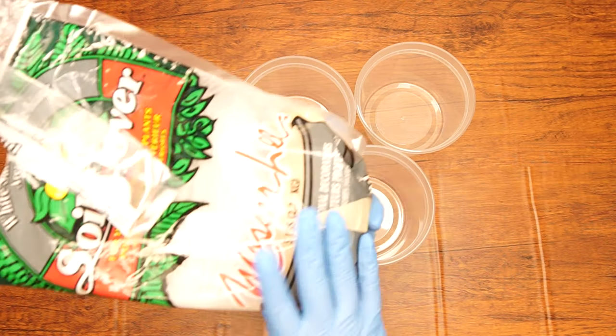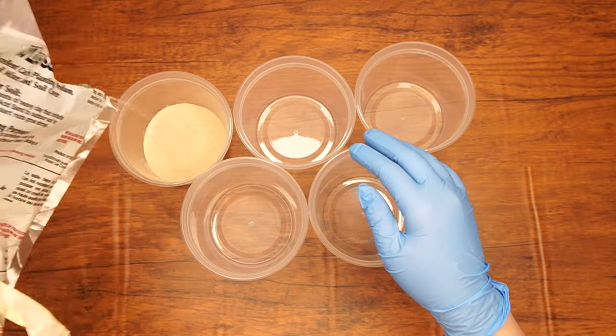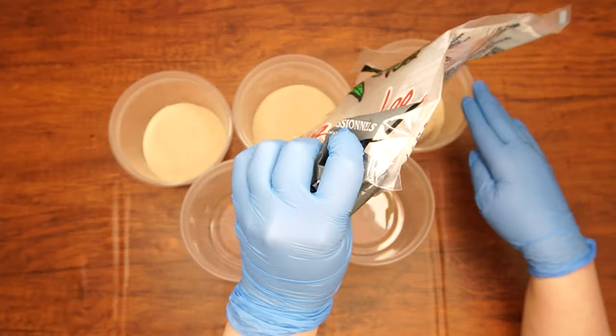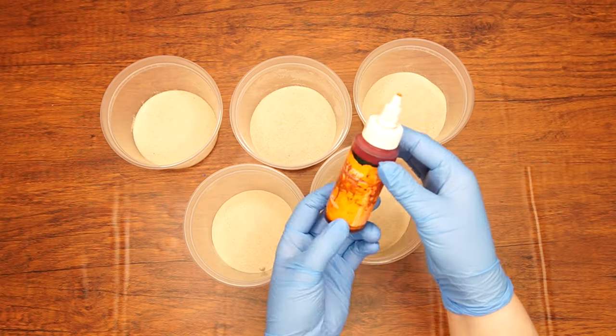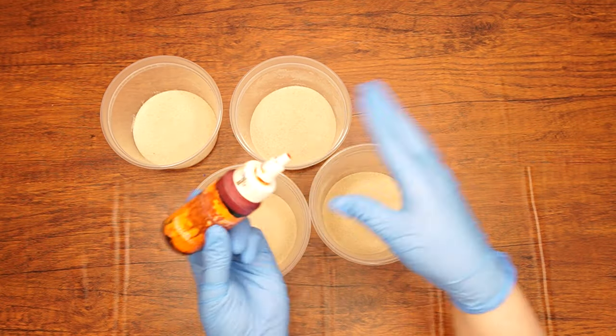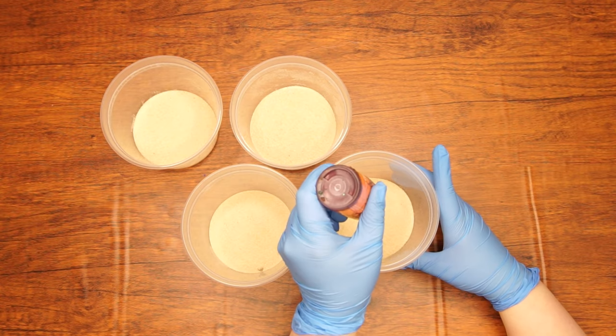Next, pour about one cup of sand into a bowl or container. This will be dyed orange. Divide the remaining one and a half cups of sand into four other bowls or containers. One should remain as is and the other three will be dyed different shades of blue. Make sure to put on disposable gloves so your hands don't turn colors.